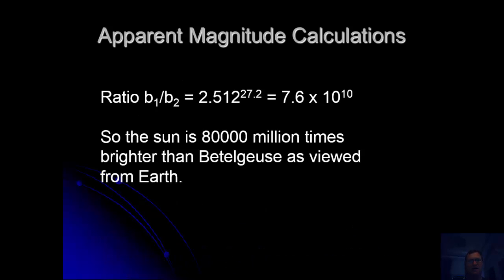You should work out that the ratio of brightness is 6.6 times 10 to the 10. So that means the sun is 80,000 million times brighter than Betelgeuse as viewed from planet Earth.